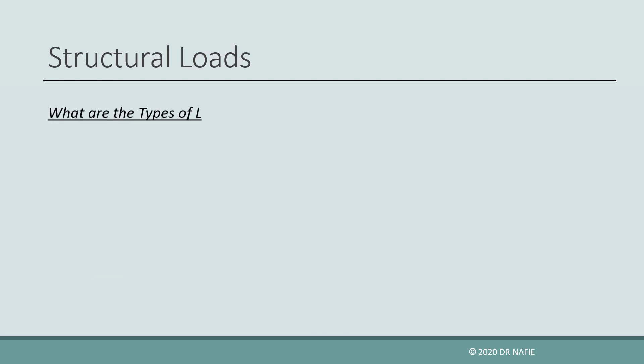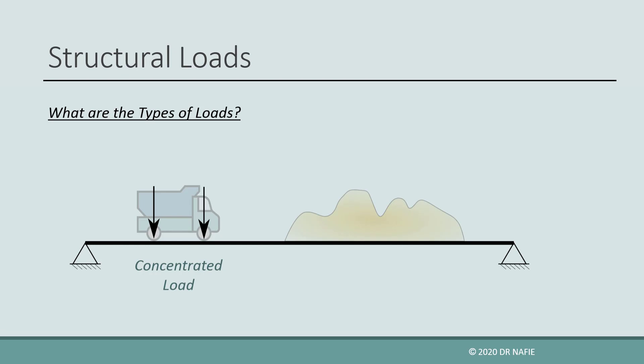There are mainly two types of loads, concentrated loads and distributed loads. Concentrated loads are loading that act at a point, or over a very small area that can be approximated at a point, such as loads due to the tires of a truck. Distributed loads, on the other hand, are loading that act on a large area, such as a pile of sand supported on a slab.